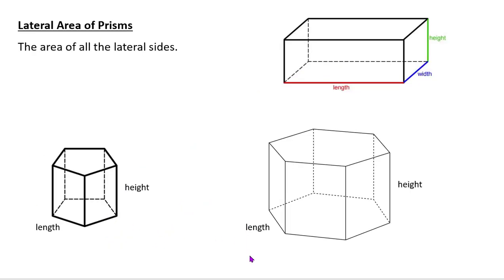Lateral area is the area of all the lateral sides. So lateral area is the area of each one of the sides—this rectangle plus this rectangle plus this rectangle plus this rectangle and so on. Our lateral area, I'm going to use this pentagon one down here. The area of each one of those sides is the length times the height, and we multiply by the number of sides that we have.